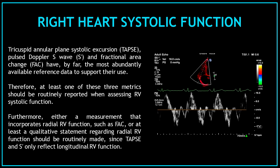Tricuspid annular plane systolic excursion, pulsed Doppler S wave, and fractional area change have by far the most abundantly available reference data to support their use. Therefore, at least one of these three metrics should be routinely reported when assessing right ventricular systolic function.